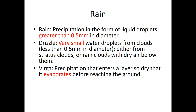Sometimes as rain or drizzle falls from a cloud, it actually begins to evaporate. This occurs when the air beneath the cloud is so dry and unsaturated that the raindrop evaporates before reaching the ground. This phenomenon is called virga, and it's actually not that uncommon — we see it regularly even here in California.